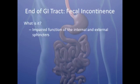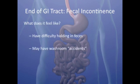Finally, we have come to the end of the GI tract and the last complication of diabetes. Poorly controlled diabetes can impair the function of the internal and external anal sphincter. When a person loses control of their internal and external anal sphincter, they can have difficulty holding in bowel movements, which can lead to washroom accidents.